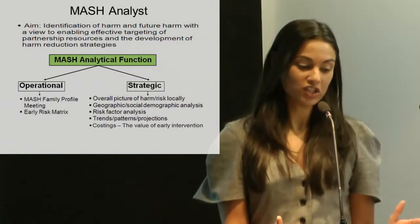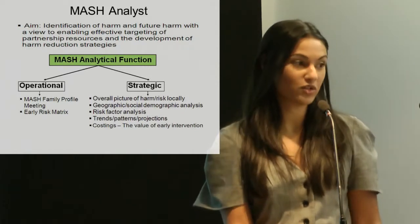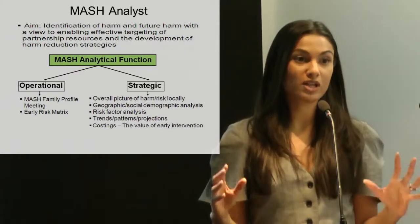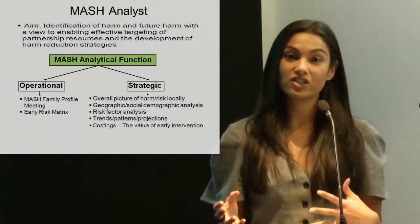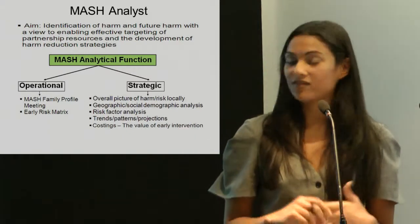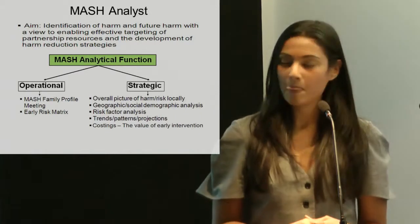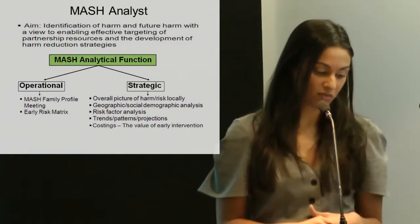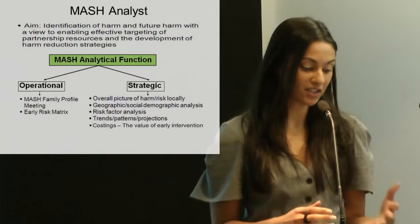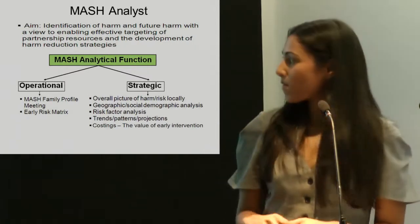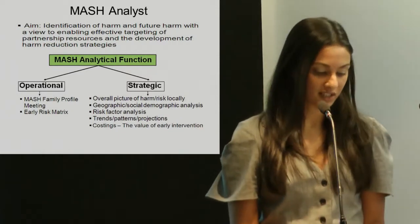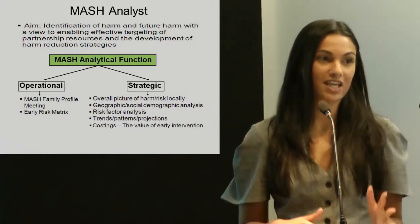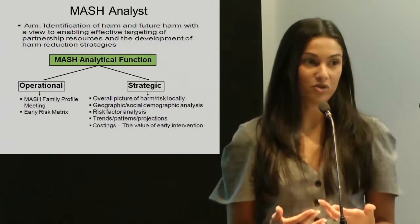And to start to develop harm reduction strategies to reduce the level of risk associated with those families and locations. The MASH analytical function within Devon sits at two levels: at the more operational tactical level and then at a strategic level. At the operational level we have, as Simon mentioned, developed the MASH family profile meeting, and alongside that we're starting to look to further develop the early risk matrix, which should enhance our ability to identify and predict harm at a much earlier stage. At the strategic level, our work really focuses on providing the geographic and social demographic analysis overlaid against the risk factor analysis that we're getting out of the MASH data.